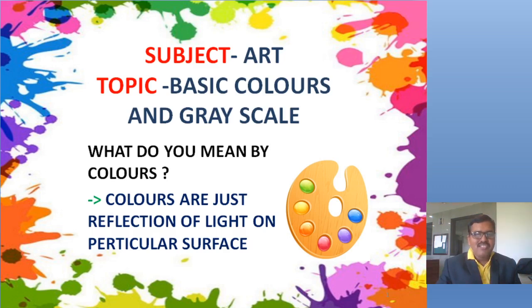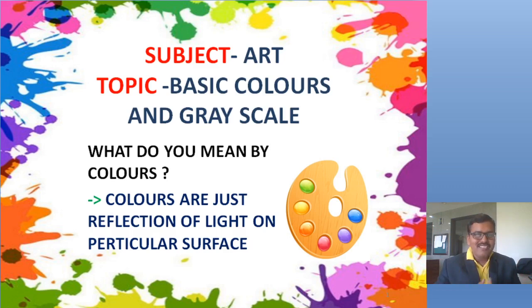Colors are just reflections of light on a particular surface. The light hits the surface, part of it is absorbed by the surface itself, and the rest is reflected. The colors are just reflections of light on a particular surface.